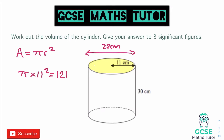Depending on which calculator you've got, that might give you the answer 121 pi, so you'll need to turn that into a decimal. Writing down the decimal version — since we've got to give our answer to three significant figures anyway — that answer comes out as 380.1327111. And that is the cross-sectional area, which is a circle.